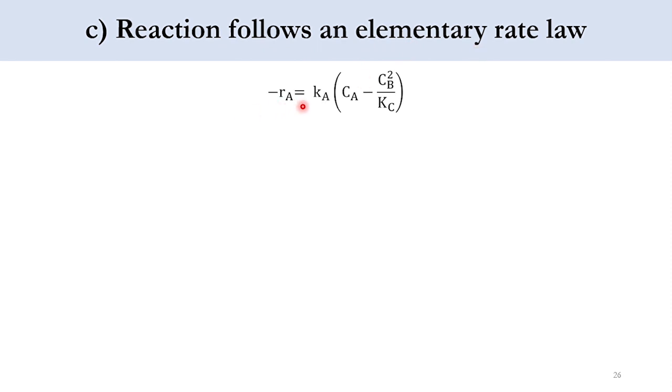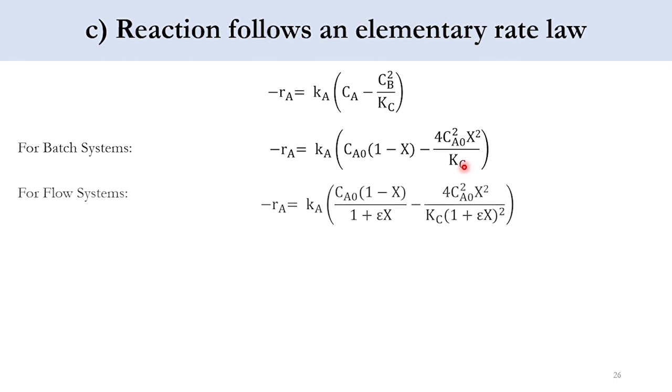We can write it as minus r_A is equal to k_A times C_A minus C_B squared over K_C. For batch system, C_A goes to C_A0 times 1 minus x, and C_B goes to C_A0 x into 2. And since it is a square, it will be 4C_A0 squared into x squared over K_C. For flow system, in the same way the equation will be same. However, the denominator will be added because the difference between these two is 1 plus epsilon x. And obviously there is pressure and temperature difference, but since these are constant, not included. So accordingly, C_A0 times 1 minus x minus 4C_A0 squared into x squared over K_C. These two are the same. The only difference is 1 plus epsilon x here and 1 plus epsilon x whole squared here.